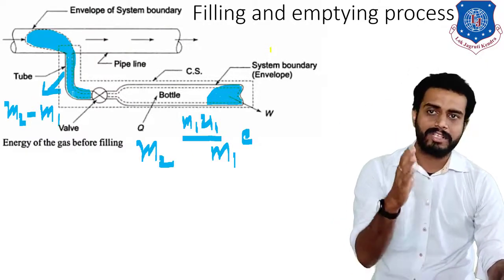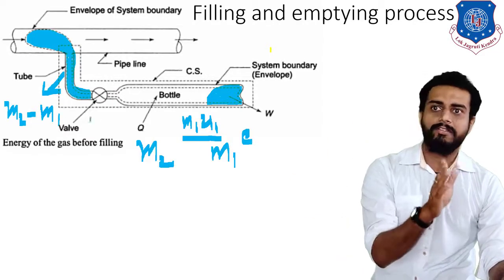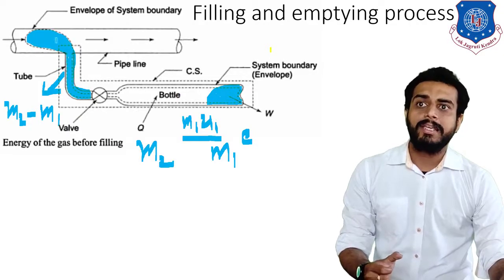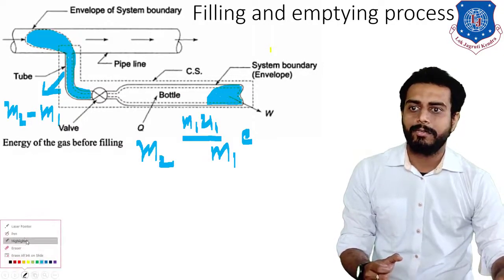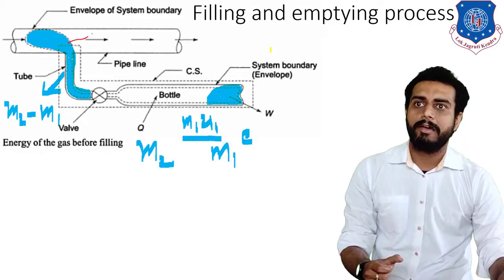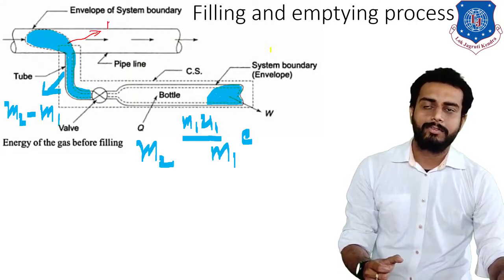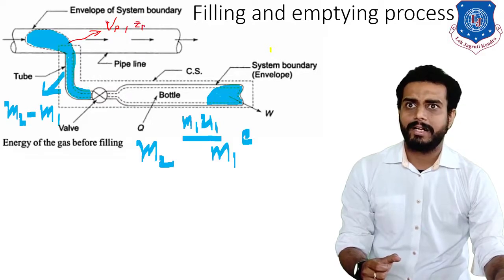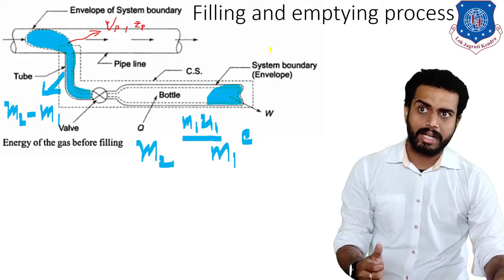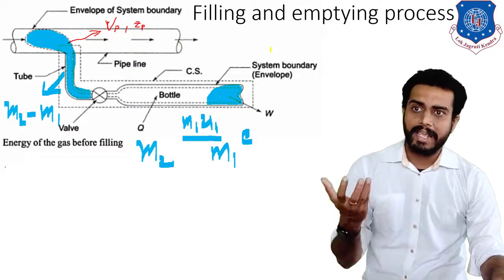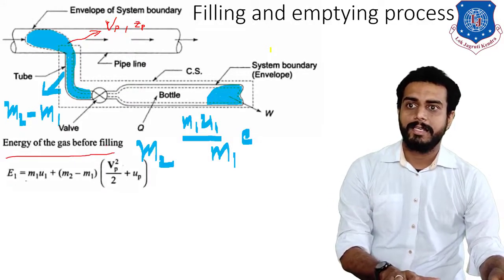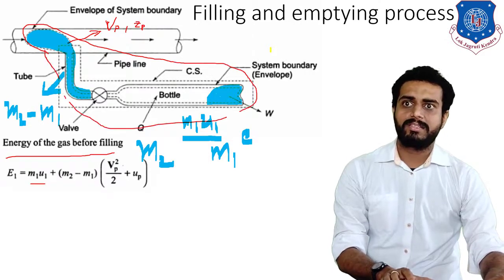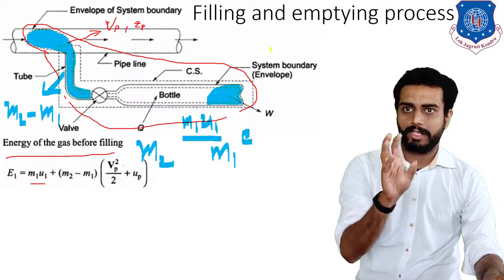When the valve is completely opened and this much gas enters into the bottle, the bottle will be completely filled. After completely filling, the mass present will be M2. Before filling, the initial mass is M1. So the mass ready to enter in the pipeline is M2 minus M1. This M2 minus M1 corresponds to the pipe, so its properties carry subscript P. The value of velocity will be Vp.